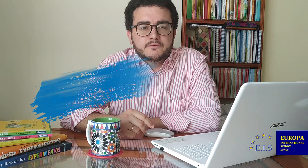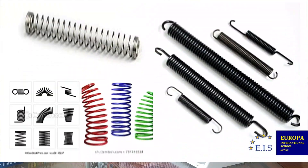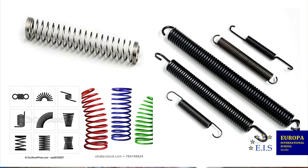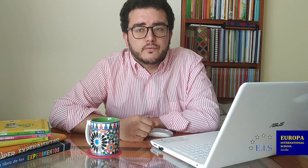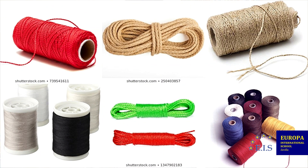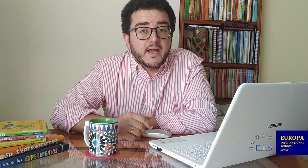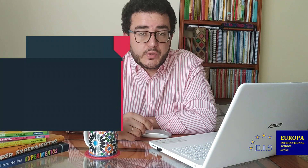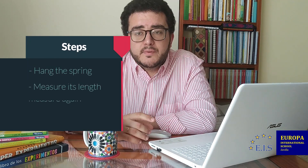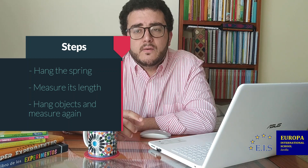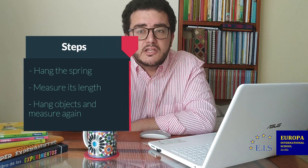Let's put it to the test — roll up your sleeves, for it is experiment time! We are going to need a spring (we can easily find one inside many pens), objects of known weight (make sure they are of a weight suitable for the spring), rope or thread to hang the spring and objects, a ruler, and paper and a pencil. Simply hang the spring from one end somewhere it can swing from, such as a door handle. Measure the length of the spring before you hang anything from it. Then, at the other end, hang the objects one by one and measure, in each case, the new length of the spring.